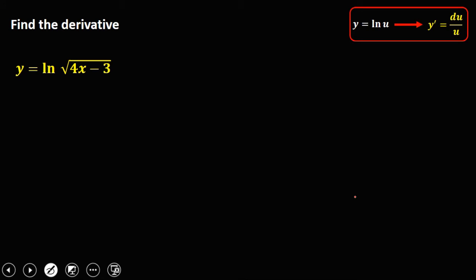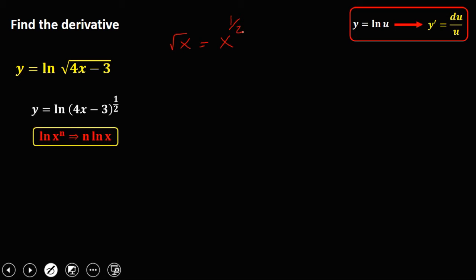We also have y equals ln of the square root of (4x − 3). First, we need to rewrite this radical in exponential form. Since square root of x equals x to the power 1/2, y is equal to ln of (4x − 3) to the power 1/2. Using the power property of logarithm — ln x to the n equals n·ln x — y equals 1/2 times ln(4x − 3).